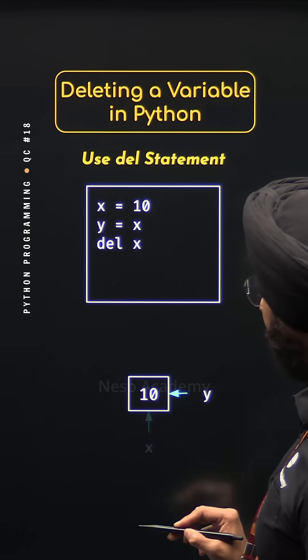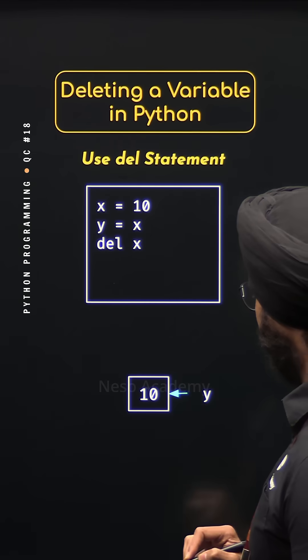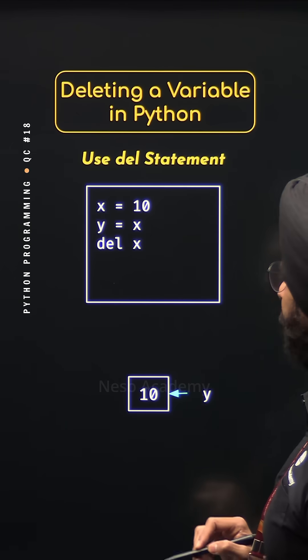This variable will be deleted but the value associated with this variable x will not be deleted. Y is still pointing to this value.